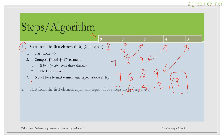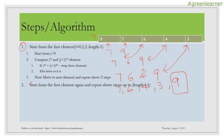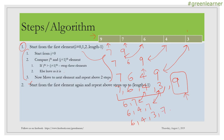Next, I start from the first element again and repeat the above steps, but now excluding the last element which has already found its position. I compare seven and six — swap them. Then seven and four — swap again, giving six, four, seven. Then I compare seven and three — swap, giving six, four, three, seven. After this second pass, seven is also at its correct position, with nine already placed.